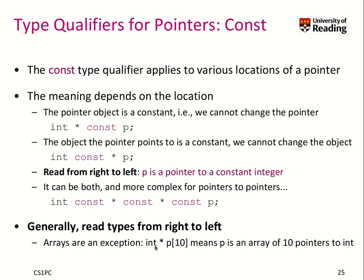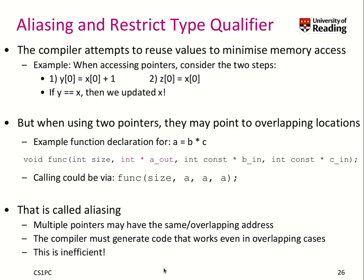One exception to reading right to left is arrays. I would say P is an array of 10 pointers to an integer. That's the only exception to the rule. Generally, I find this rule very useful.